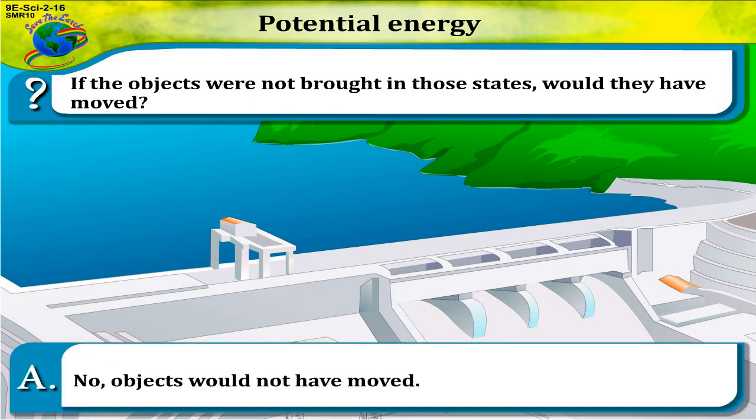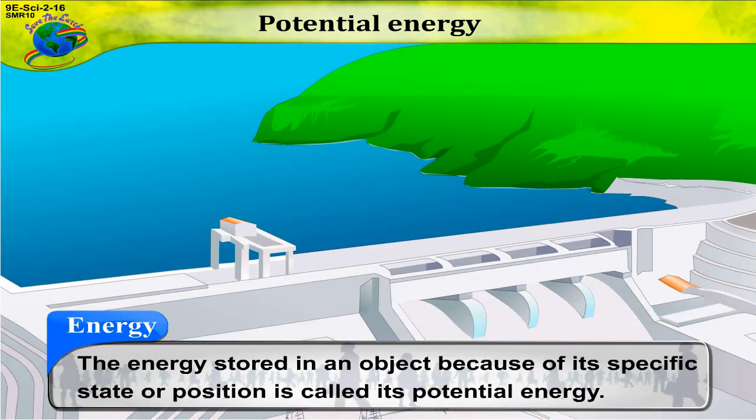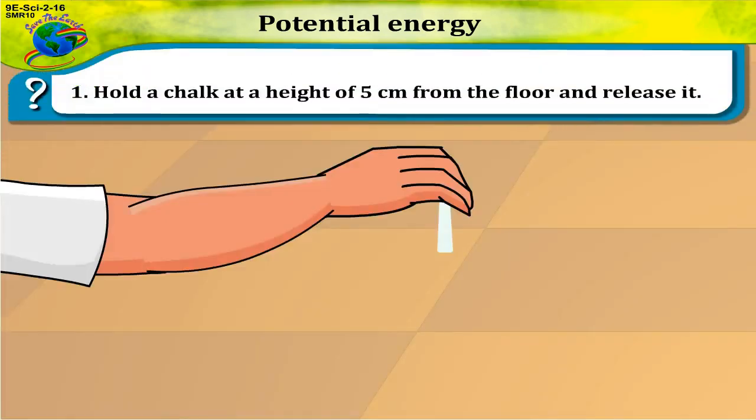Objects would not have moved. The energy stored in an object because of its specific state or position is called its potential energy. Hold a chalk at a height of five centimeters from the floor and release it.